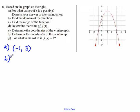Part D, the domain of the function. The domain of a function is the set of all possible x values. Because this is a parabola, there are no restrictions on what x can be. So the domain is the set of all real numbers. In interval notation form, it would go from negative infinity to positive infinity.